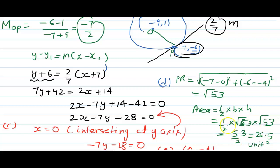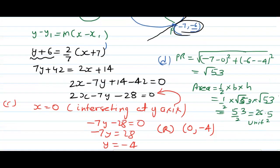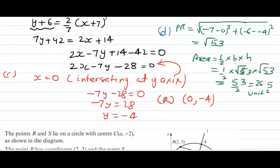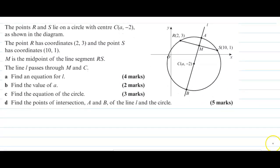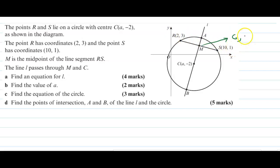This is what we have done — you can check your working against mine. The next question: the points R and S lie on the circle with coordinates R(2, 3) and S(10, 1). M is the midpoint, which is (2+10)/2 = 6 and (3+1)/2 = 2, so midpoint M is (6, 2). The line L passes through M and the center C.